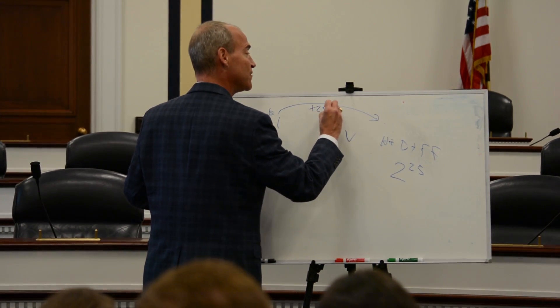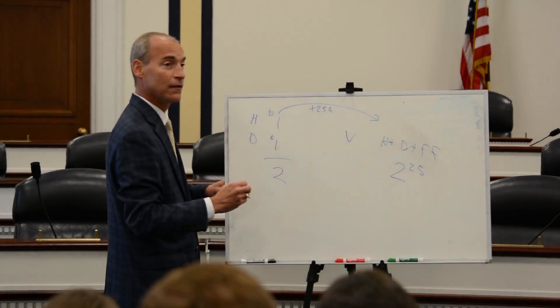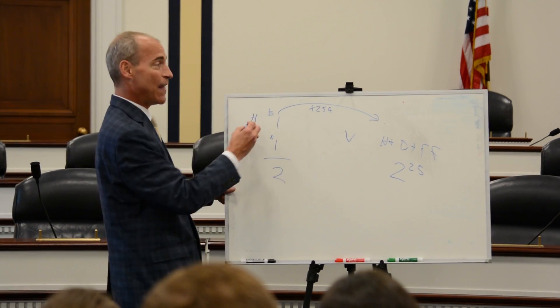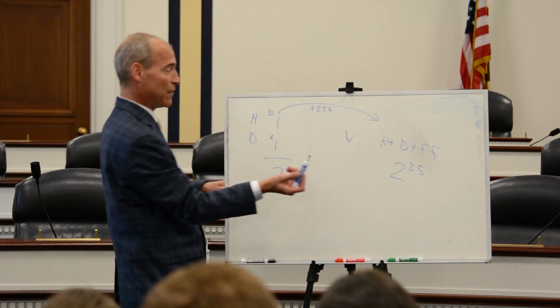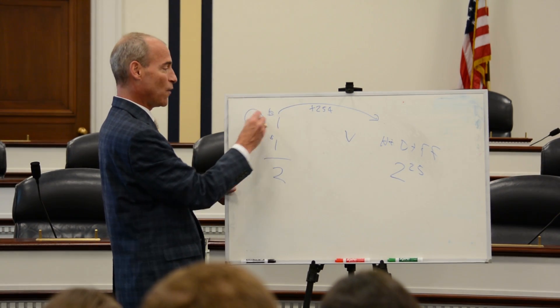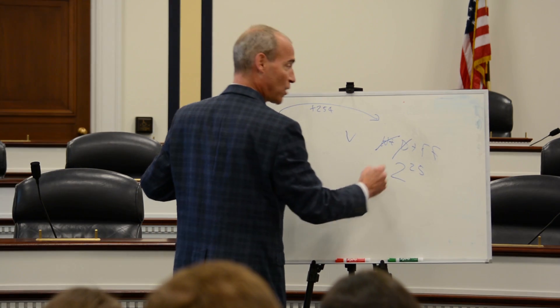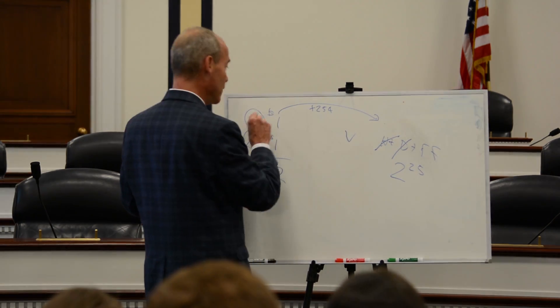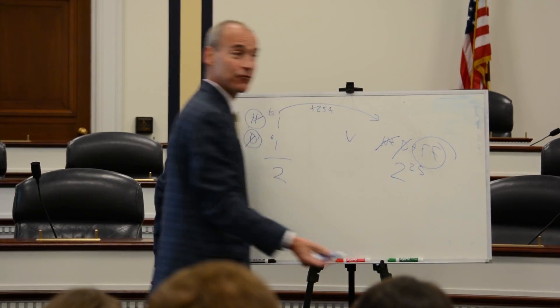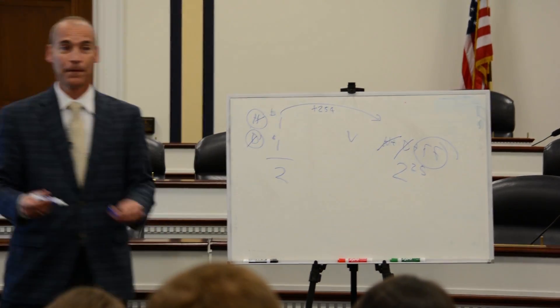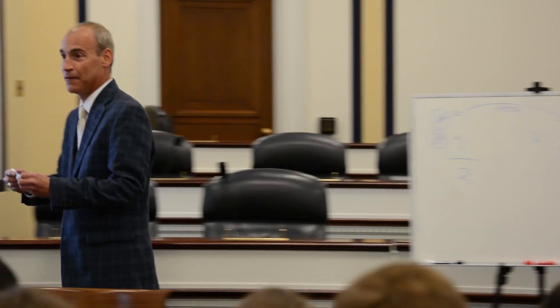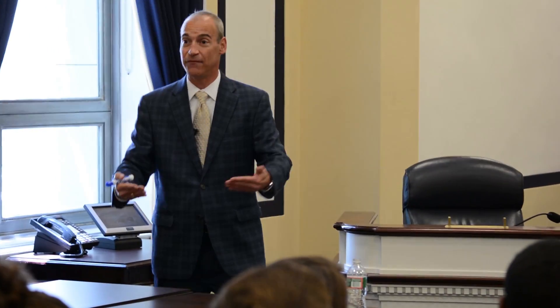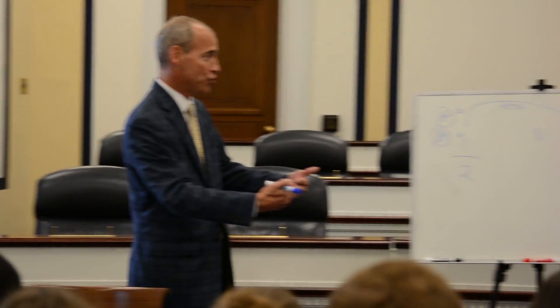Moving from option A to option B increases my cost by 25 cents — that's the cost side. What about the benefits? Well, the hamburger and drink are common to both options. What's left — the difference — is the french fries. We took the change in cost and the change in benefit. This is the way people make decisions: by looking at margins.